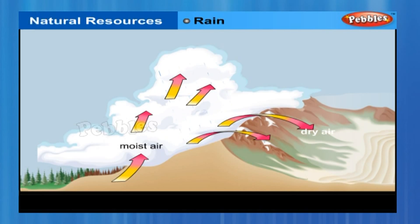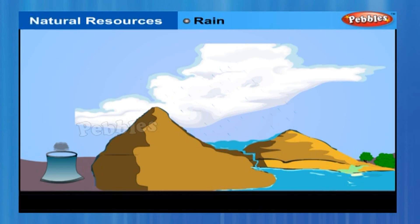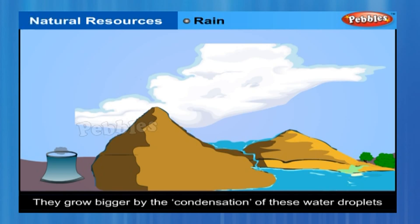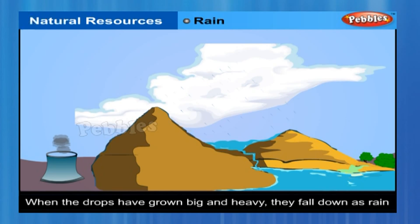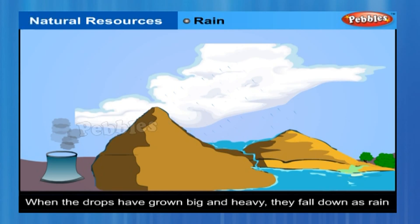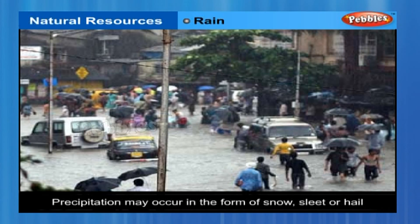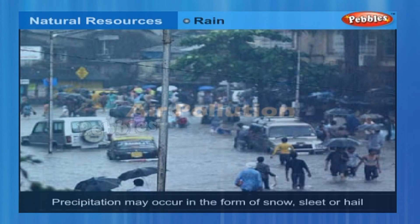This condensation of water is facilitated if some particles could act as the nucleus for these drops to form around. Normally, dust and other suspended particles in the air perform this function. Once water droplets are formed, they grow bigger by further condensation. When the drops have grown big and heavy, they fall down in the form of rain. Sometimes, when the temperature of air is low enough, precipitation may occur in the form of snow, sleet or hail.